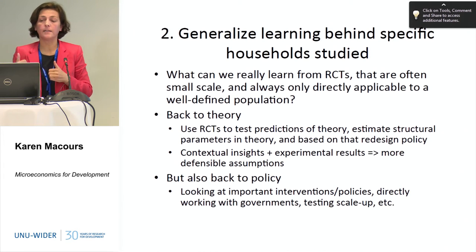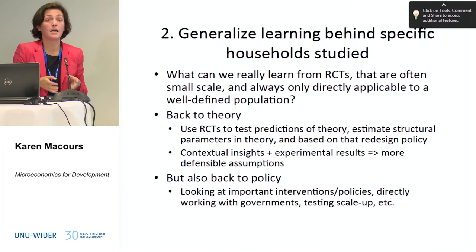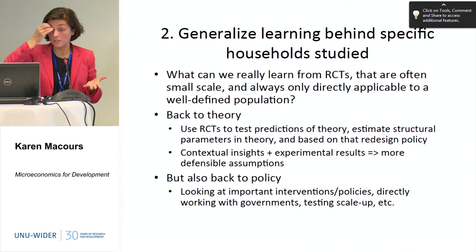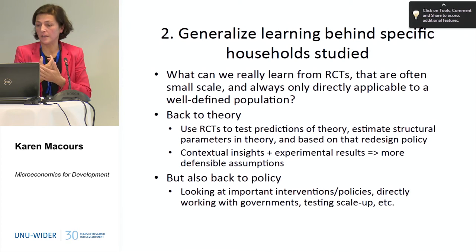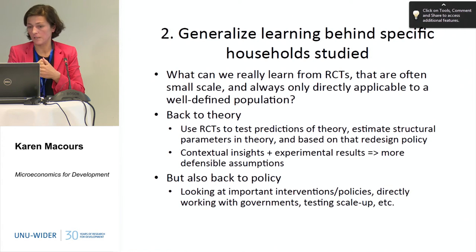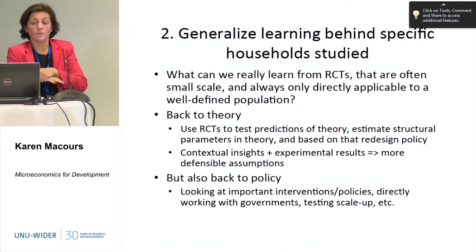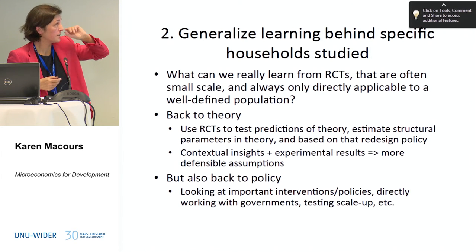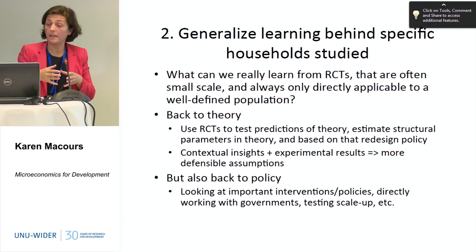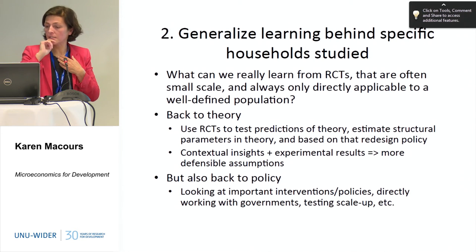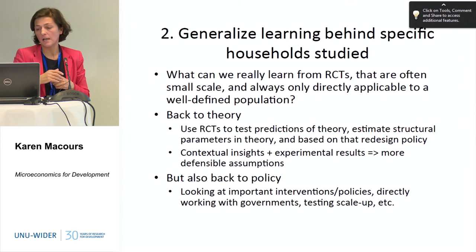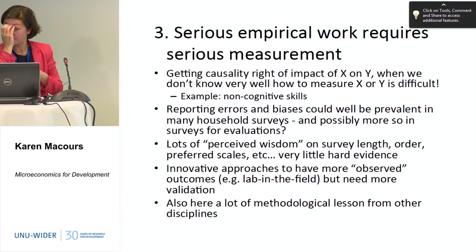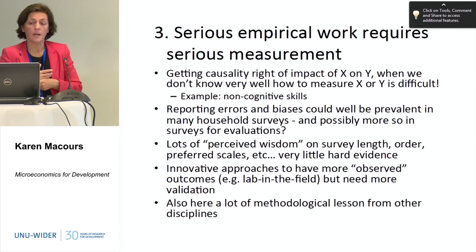This raises the question of generalization. It's Nicaragua, a specific program, a relatively poor country in Latin America — how can we generalize? More generally, when we do RCTs, how can we generalize beyond the specific households we study? These RCTs are small scale, focused on a very defined population. This is where theory can help — taking these estimates into structural models and thinking about redesigning policies at scale.